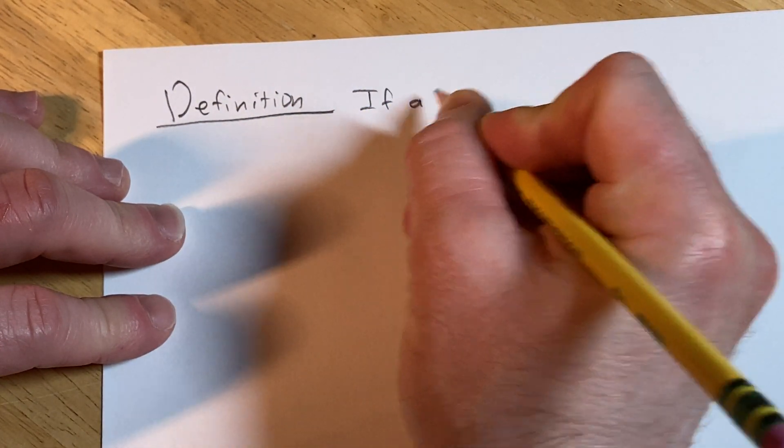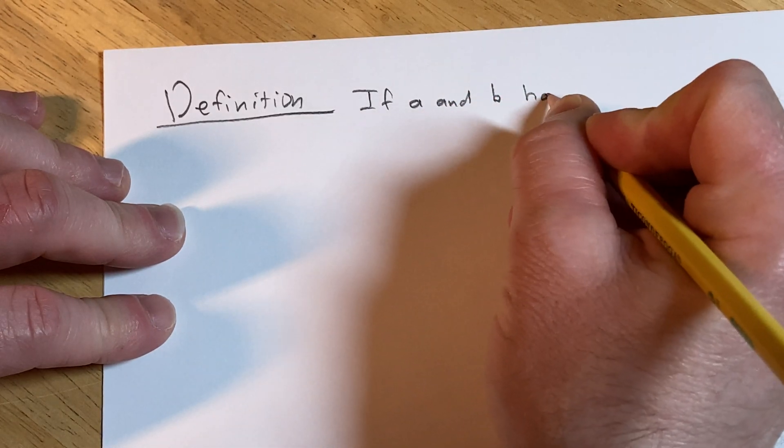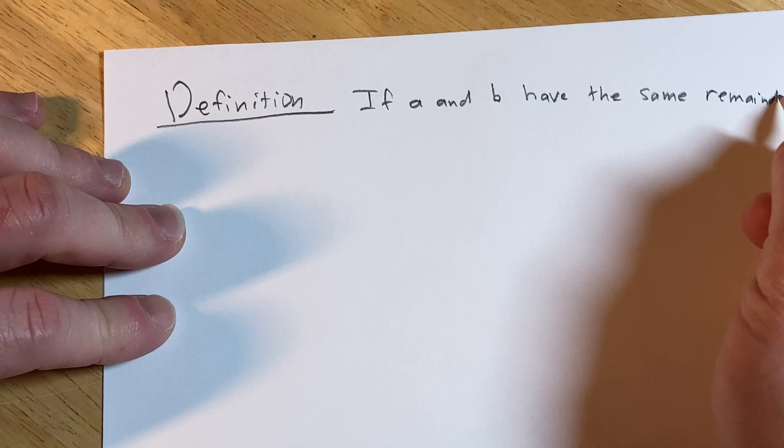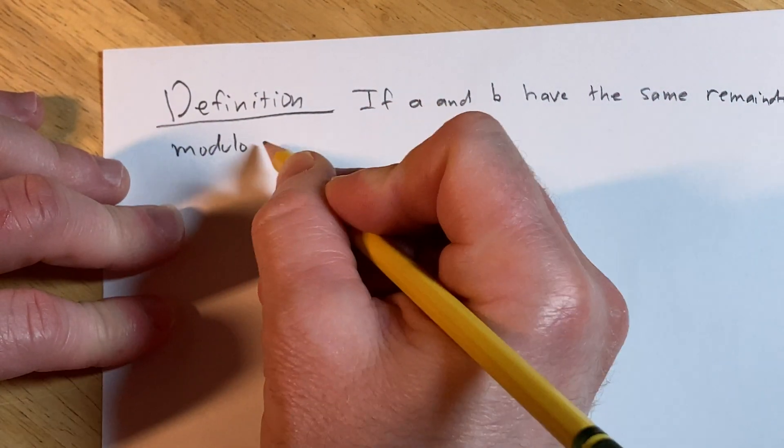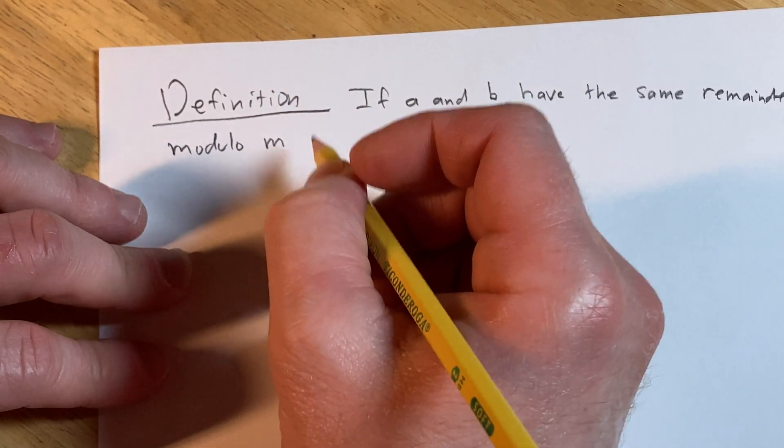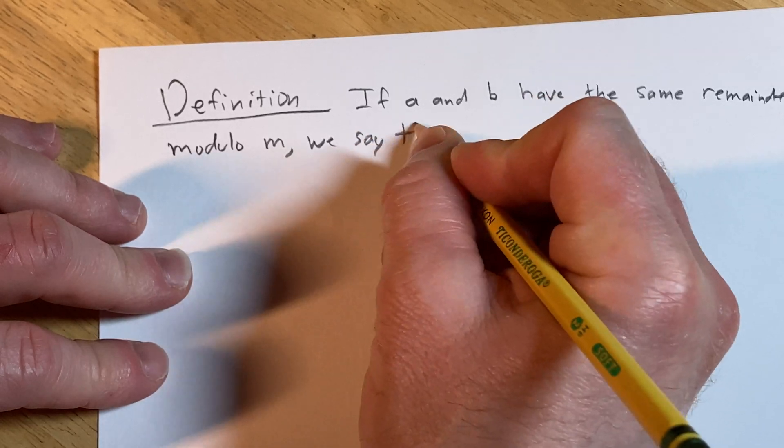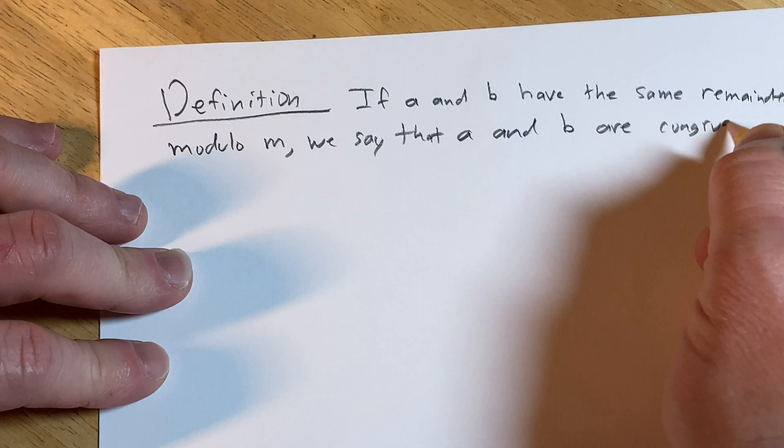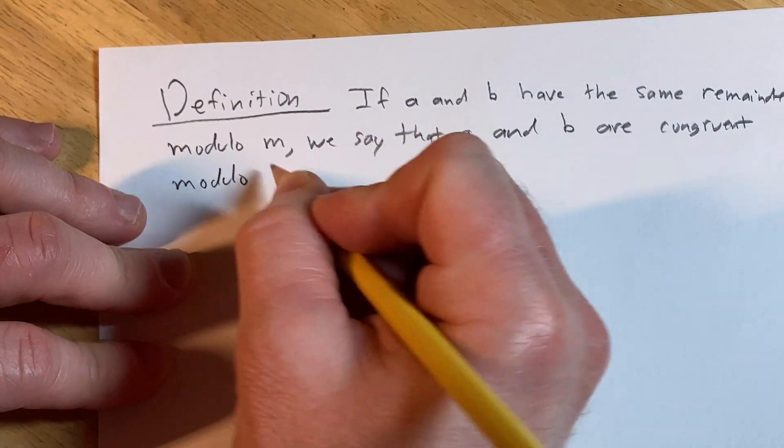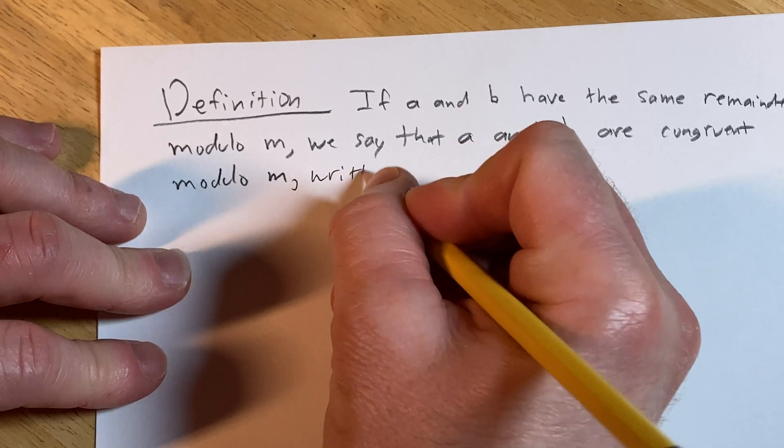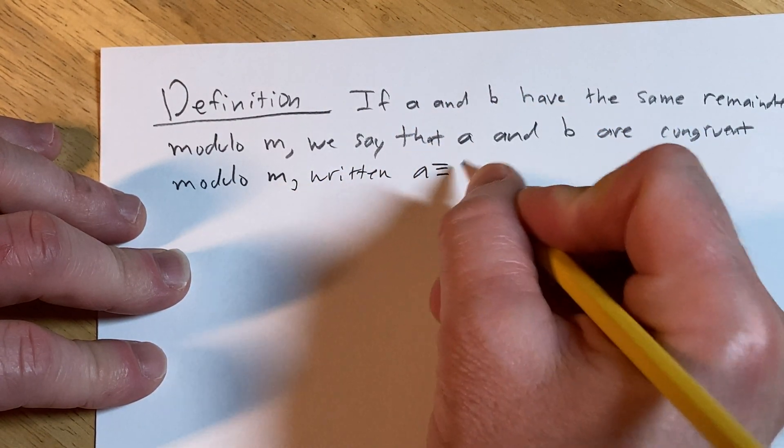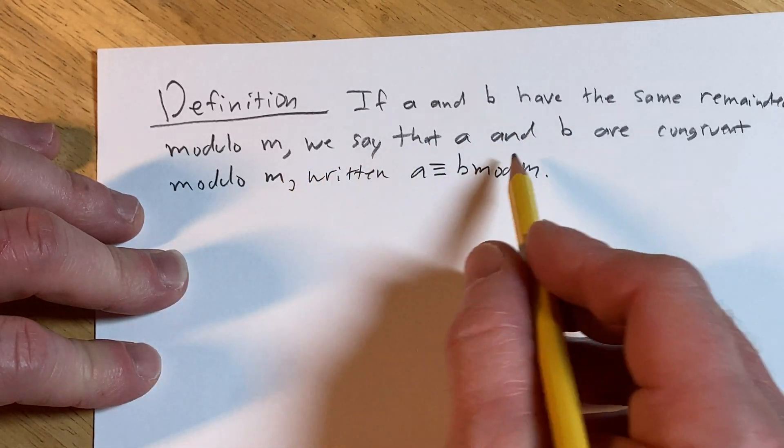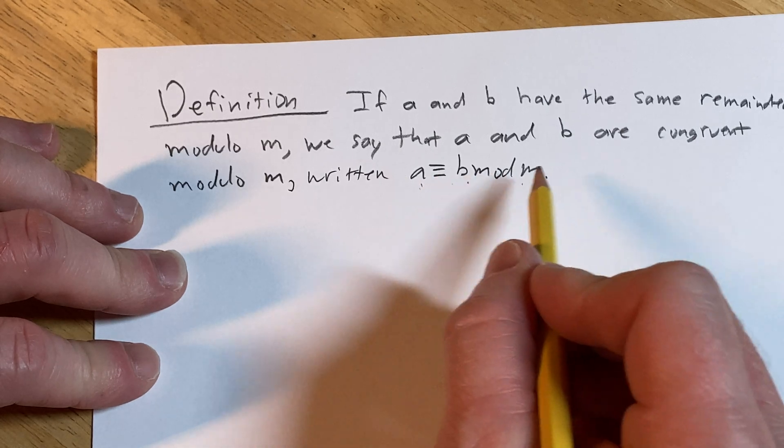If a and b have the same remainder modulo m, we say that a and b are congruent modulo m, written a ≡ b (mod m). That's how it's read.